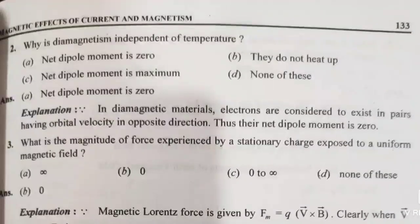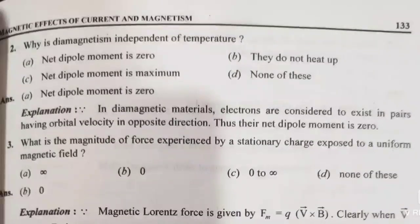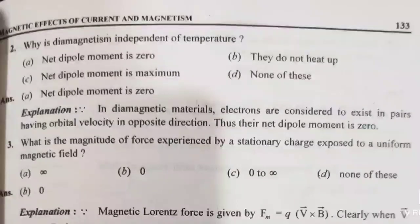Next question: which property is diamagnetism independent of? Diamagnetism is independent of temperature. In diamagnetic materials, electrons exist in pairs having orbital velocity in opposite directions, so the net dipole moment is zero. The first property is that they are repelled by a magnet. So, why is diamagnetism independent of temperature?